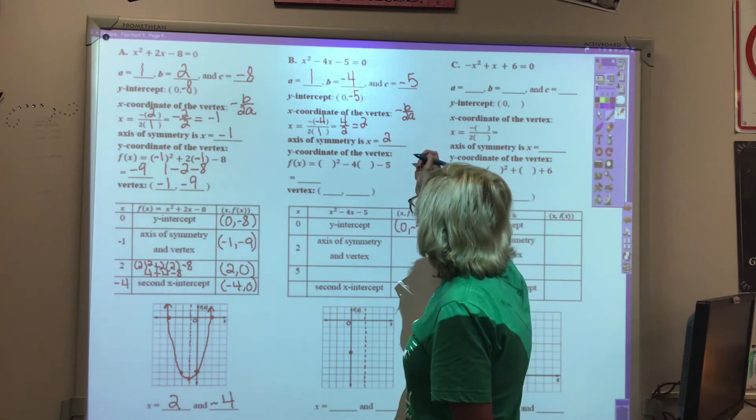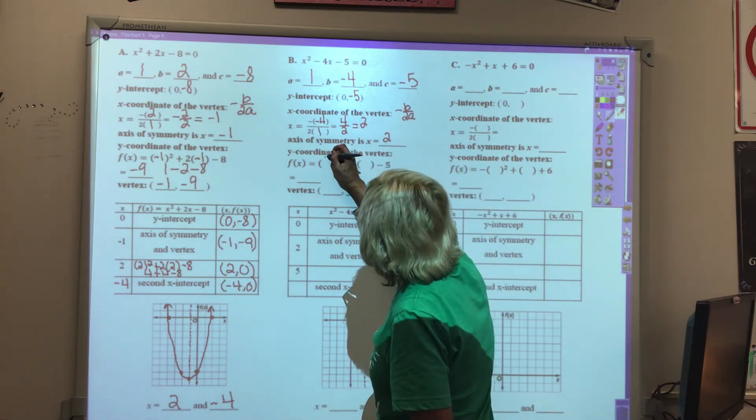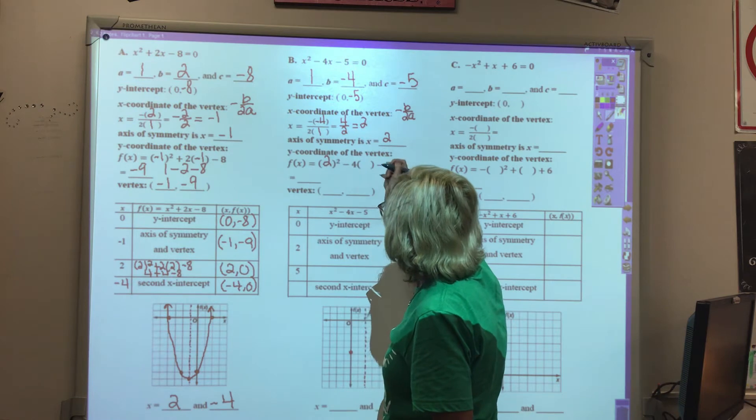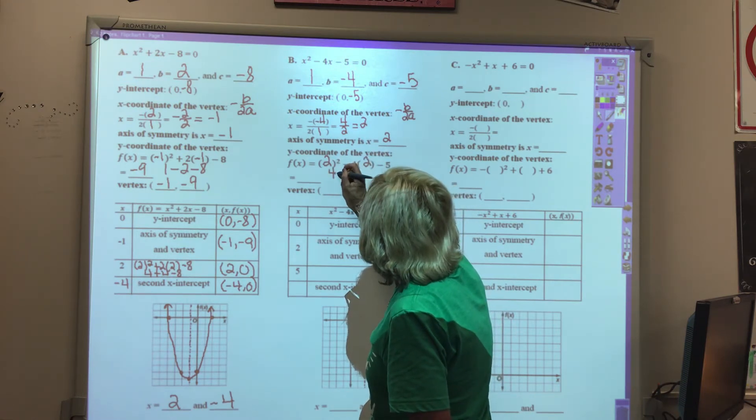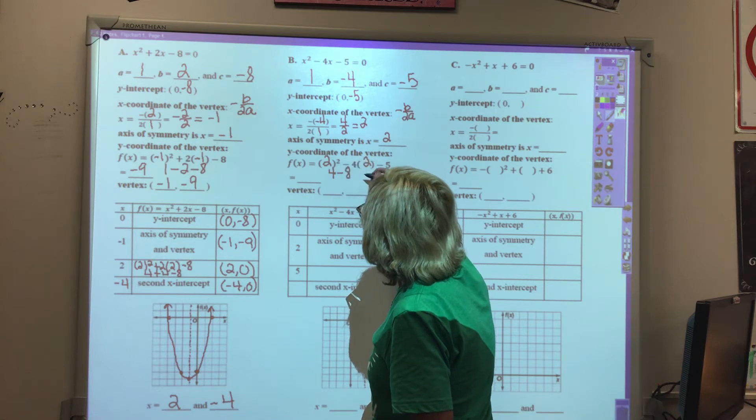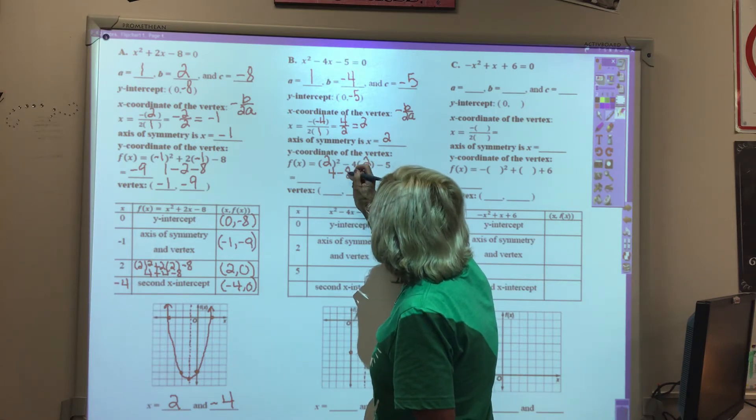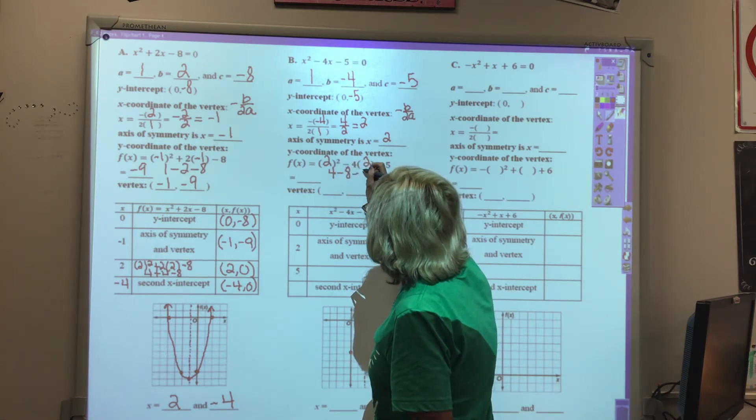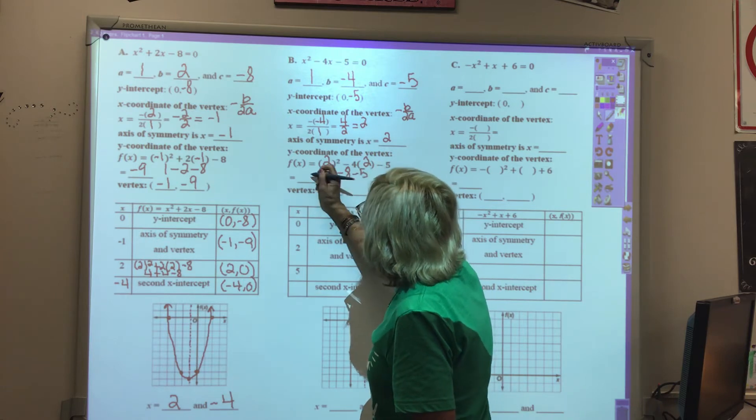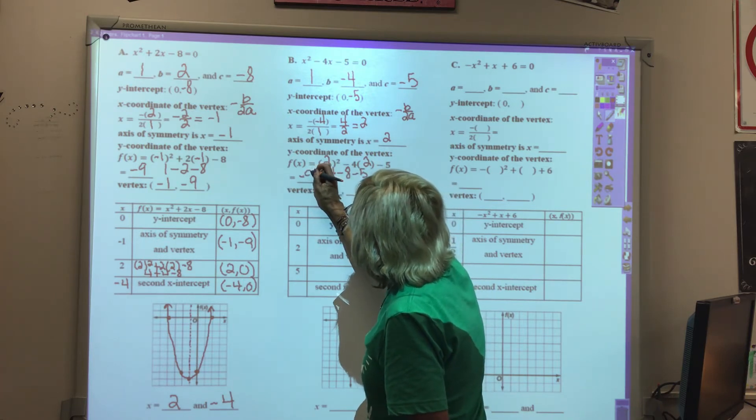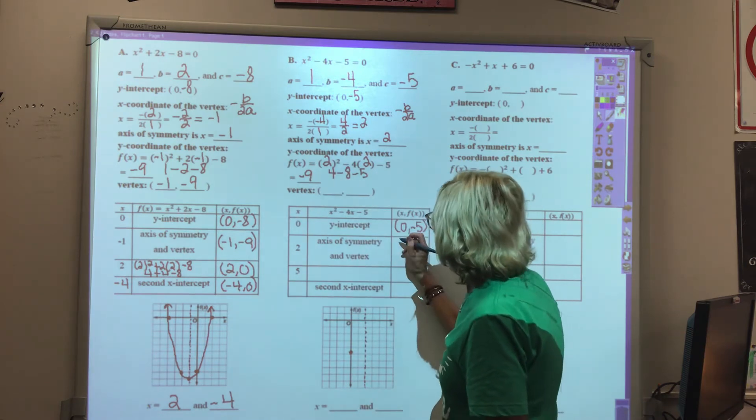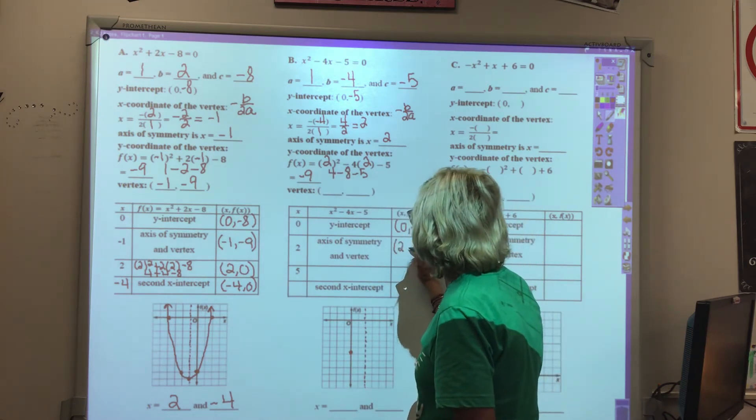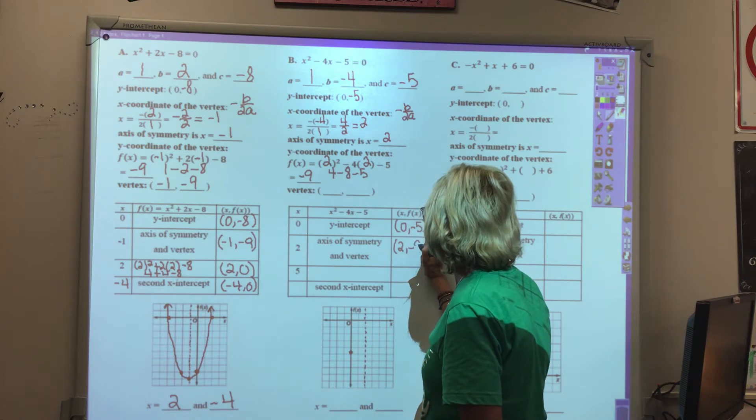The y-coordinate of the vertex, we plug in the axis of symmetry value, the x value. 2 squared would be 4 minus 4 times 2 would be 8. So that would be negative 4 minus 5 would be negative 9. So our vertex is at 2, negative 9.